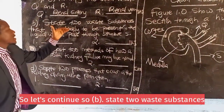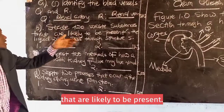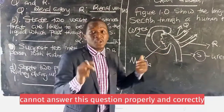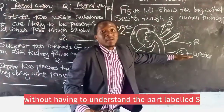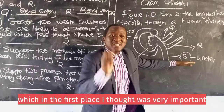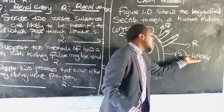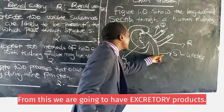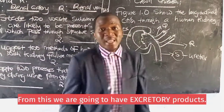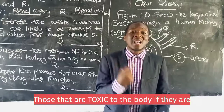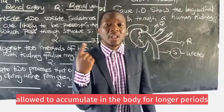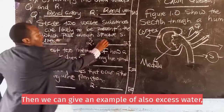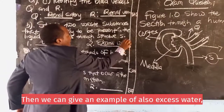Question B asks about waste substances present in the liquid which passes through structure S. You cannot answer this properly without understanding that structure S is the ureter — a duct that connects to the bladder. From here, we have excretory products that are toxic to the body if allowed to accumulate for longer periods. Examples include urea and excess water.